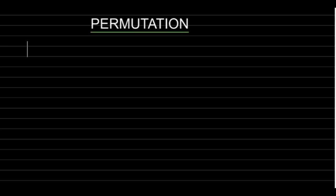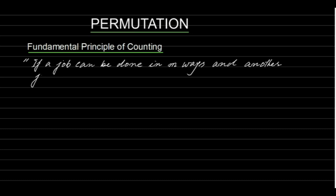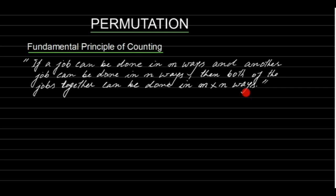In this video we are going to discuss permutation. There are a few basic terms associated with the concept of permutation. Let's talk about those terms first. The fundamental principle of counting states that if a job can be done in M ways and another job can be done in N ways, then both jobs together can be done in M into N ways.